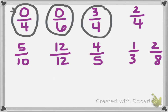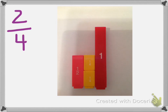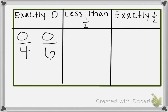The next fraction we're going to look at is 2 fourths. We're going to use the fraction towers to help us. Here we've built 2 fourths, and you can tell by looking at it that it is exactly the same size as 1 half. So when we put it on our chart, we're going to put it for exactly 1 half. 2 fourths and 1 half are equivalent fractions — they're equal.